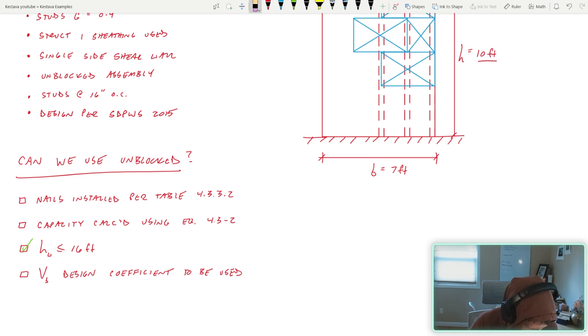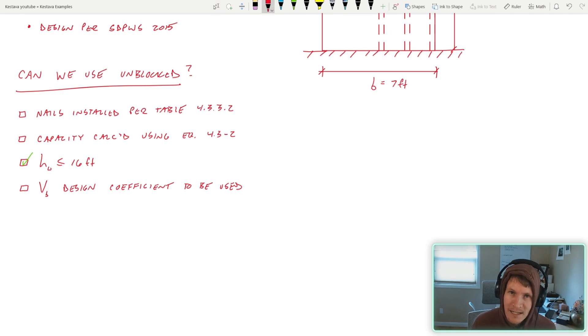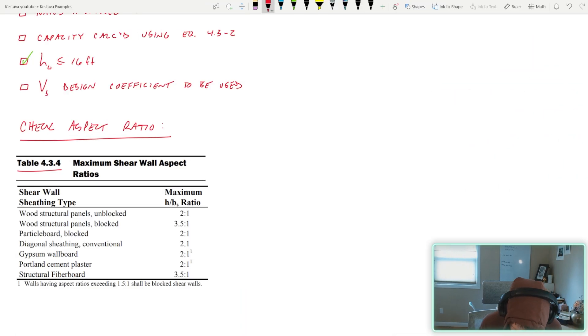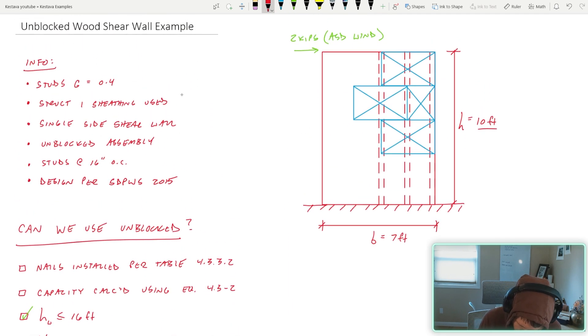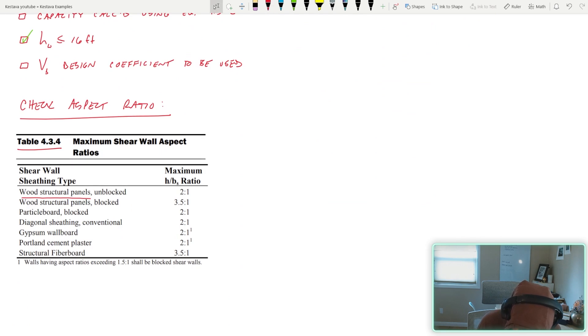Next thing we've got to do: check our aspect ratio, make sure we're within our limits for unblocked condition. You'll find the table here, I snipped it from the SPID WHIZ. We are doing wood structural panels, structural one sheathing, and unblocked, so our maximum ratio is 2 to 1. We have a footnote down below. Always check your footnotes, but it's footnote 1 which only applies to here and here, so it's not applicable to us today. We're clear.